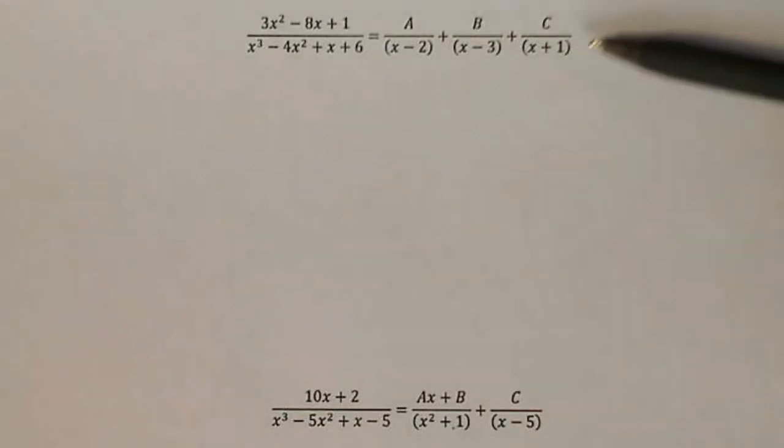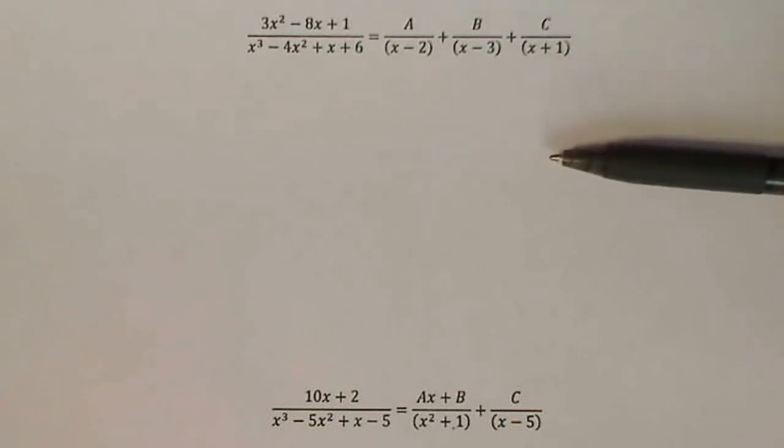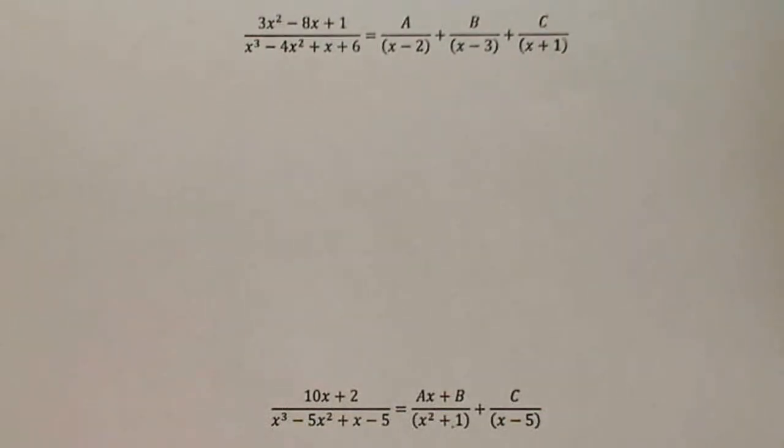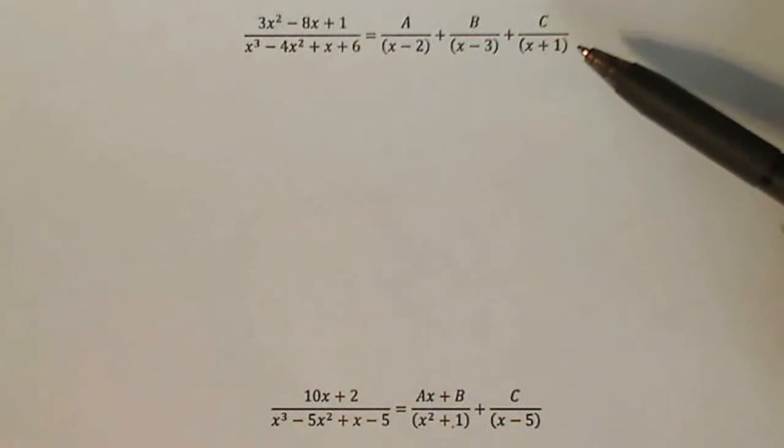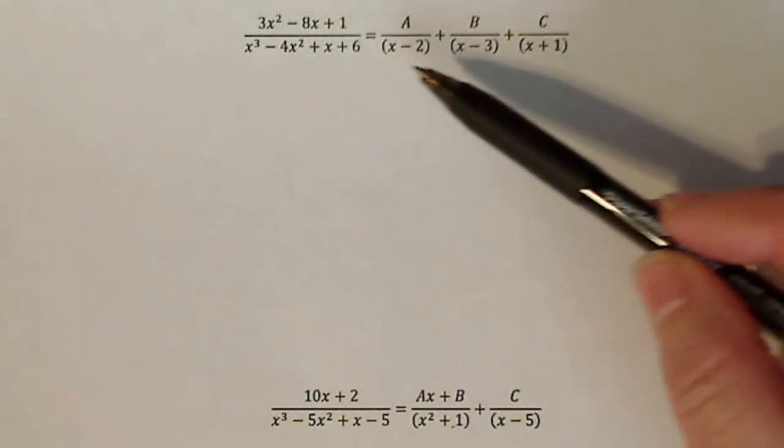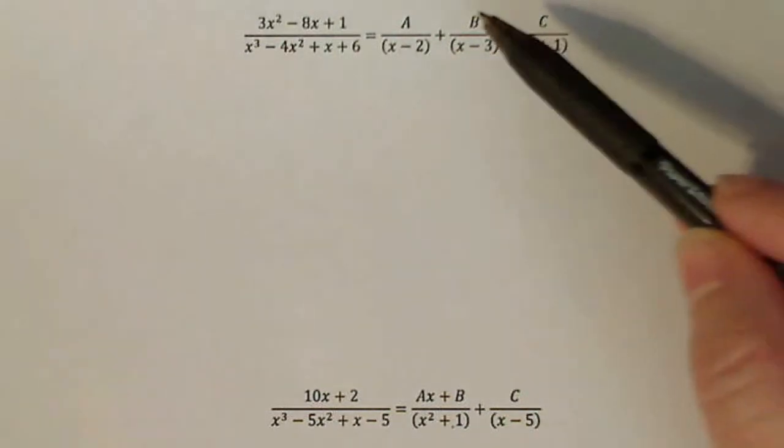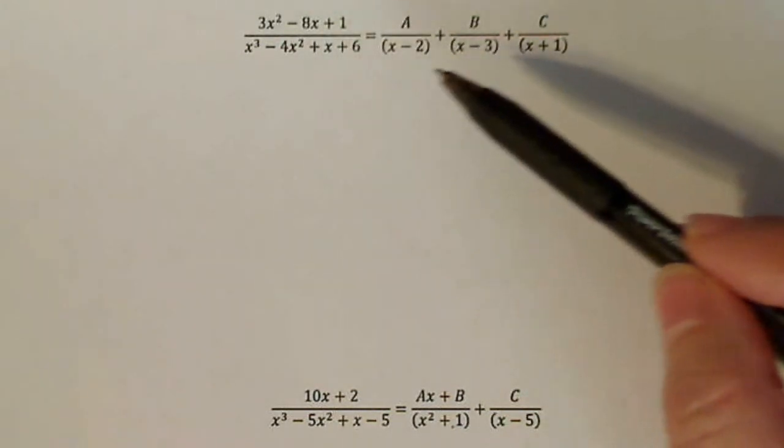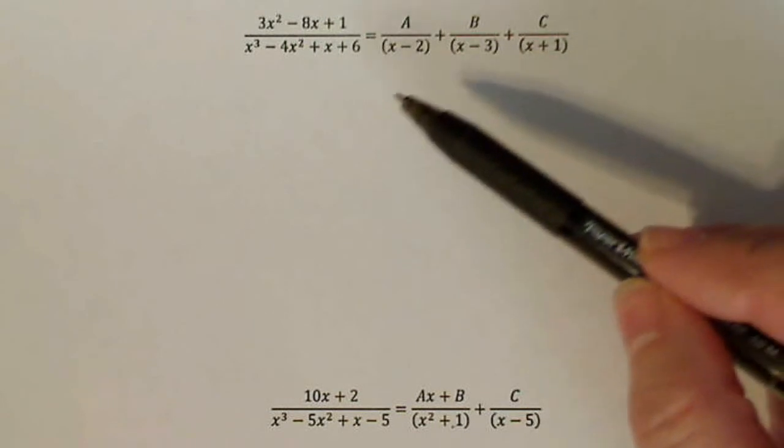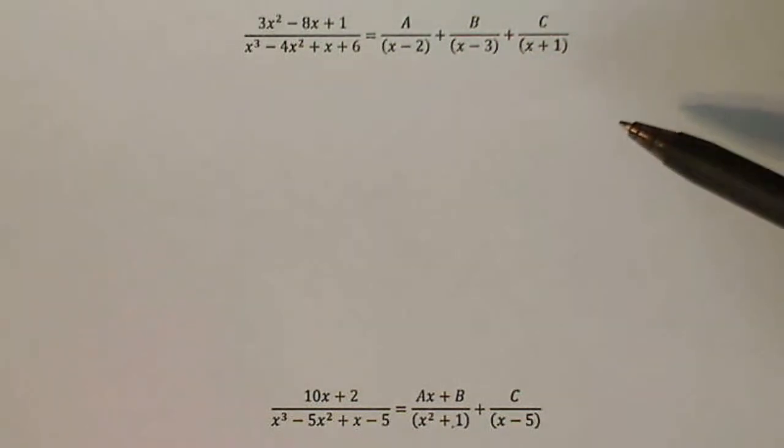However, the algebra that happens after this point is quite tedious and I wanted to show an example of it. Now, in my class, if you're taking my class, I had asked them to finish this one off by multiplying both sides by the common denominator and then collecting all the like terms on this side and after that we do some really neat algebra with it.